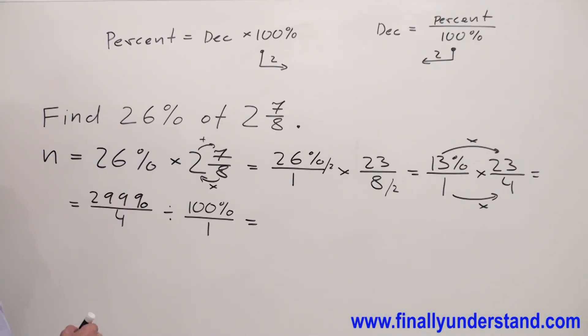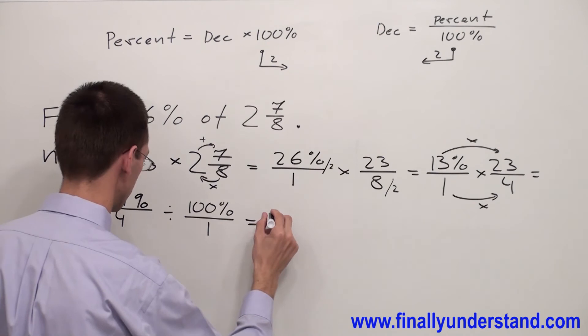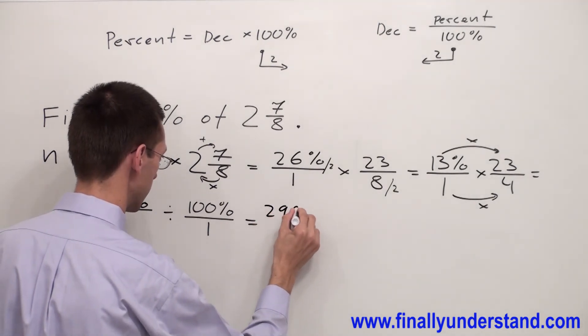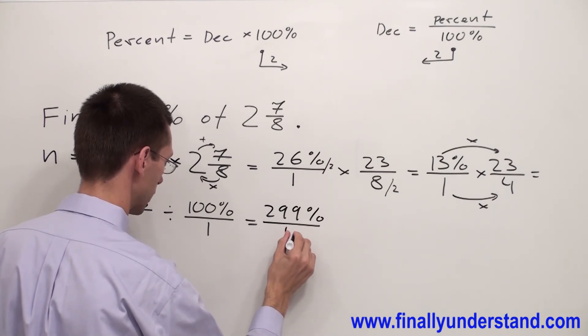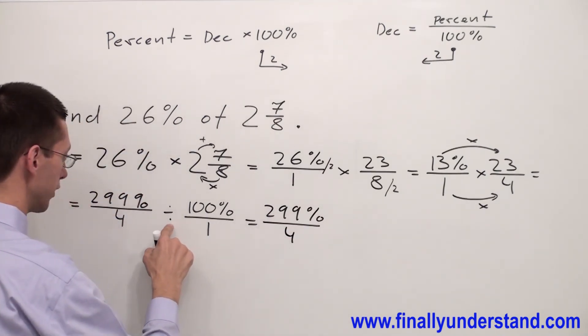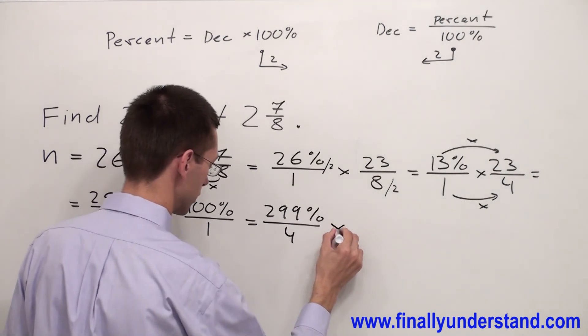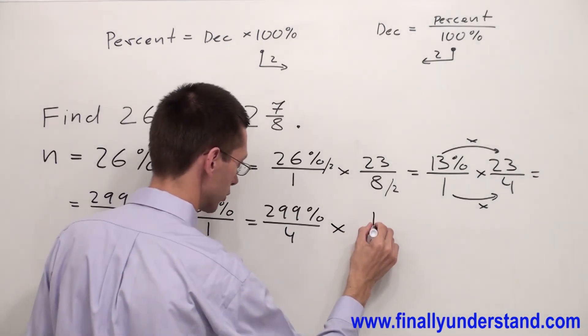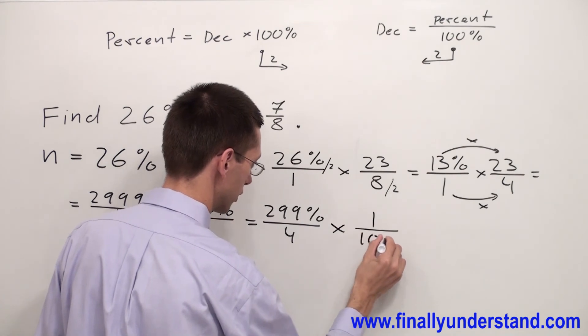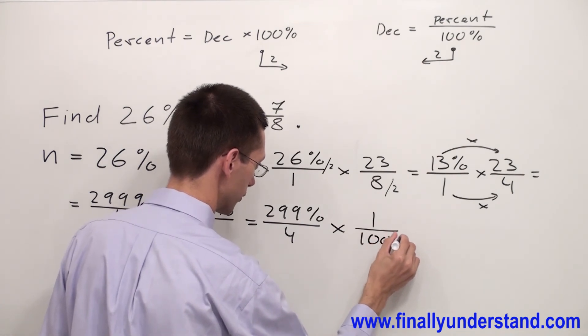Anytime we divide fractions, we have to copy down the first fraction. So I have 299% over 4. Division we have to change to multiplication, and we have to find the reciprocal of the second fraction. That's why I'm going to write 1 over 100%.